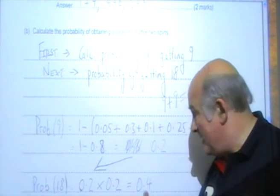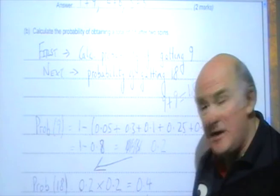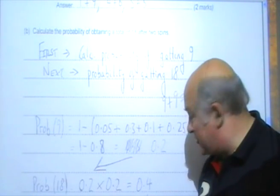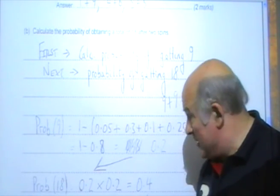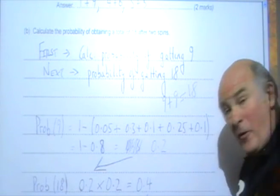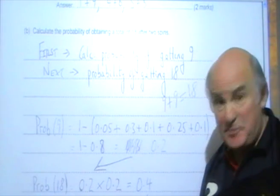What a shame. 0.2 times 0.2 should have one, two decimal places. Sadly, it's wrong. It should be 0.04. But nonetheless, the method is correct. And four marks, well, the student obtains three marks, which is pretty good. Thank you.